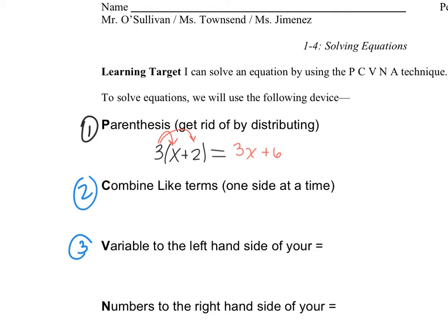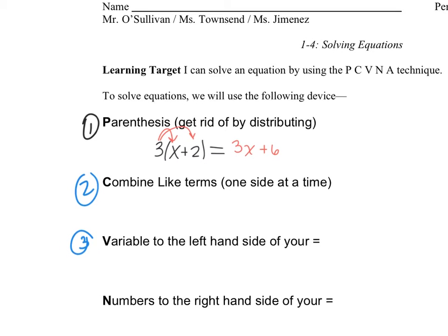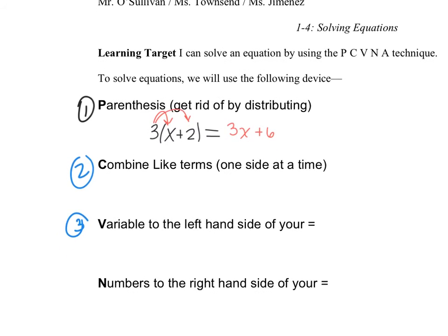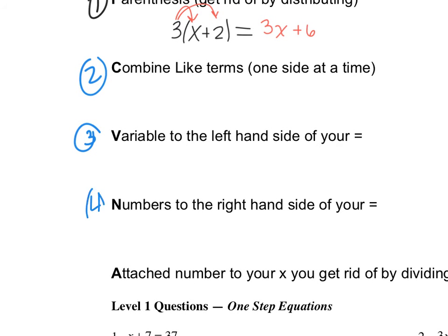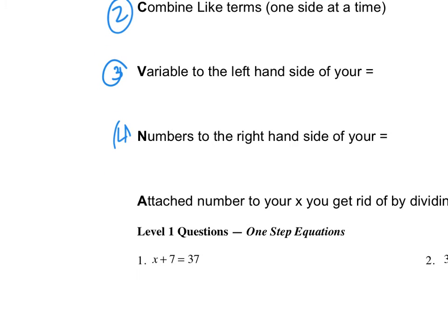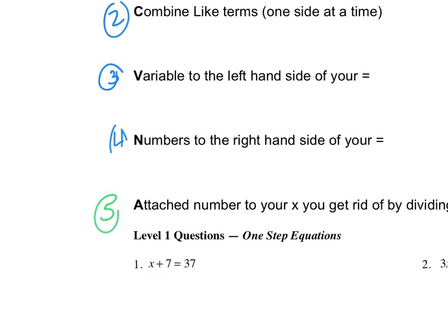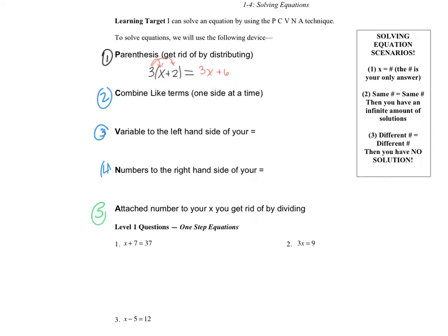Part three, variable: get your x's or your y's or your q's — any variable — to the left-hand side of your equal. Number four, numbers to the right-hand side. So basically, things that don't have an x or a variable attached to it, you're going to move to the right-hand side of your equal. And last but not least, we have the A. You would think A stands for answer, but no — A stands for get rid of the number attached to your x by dividing.